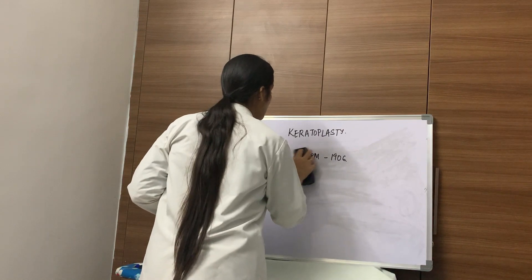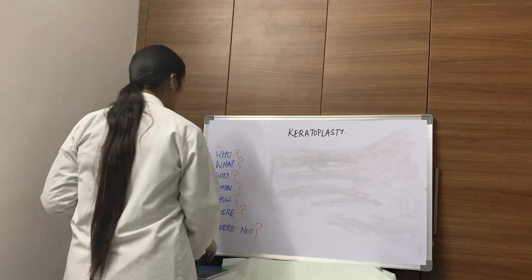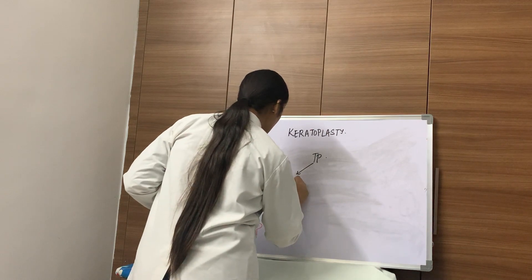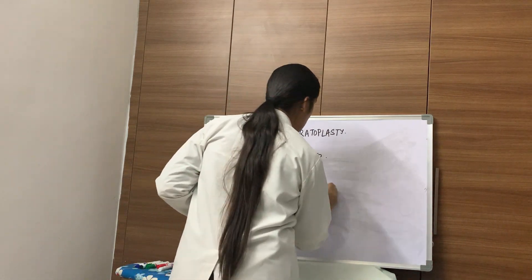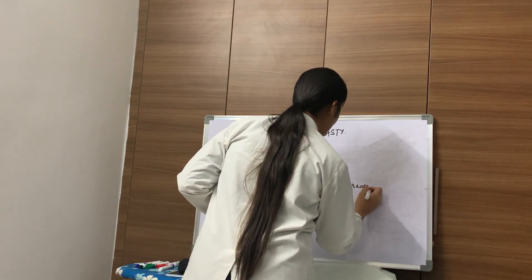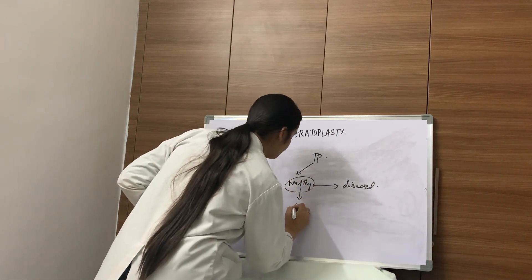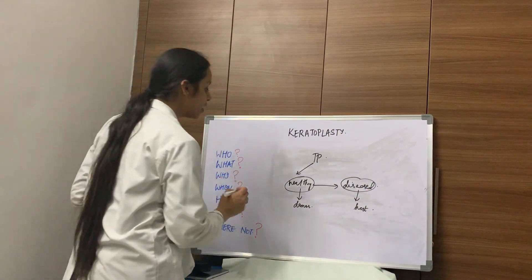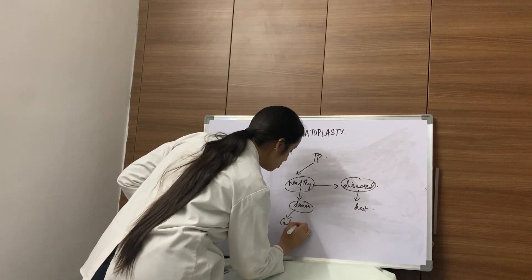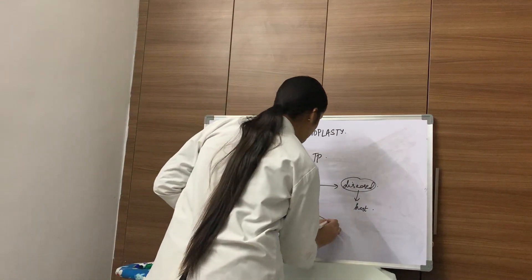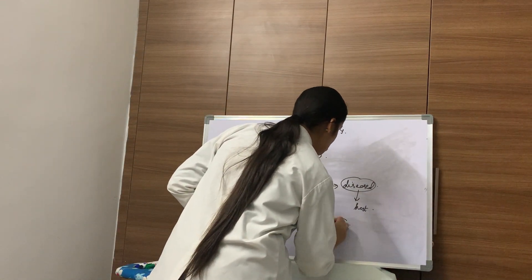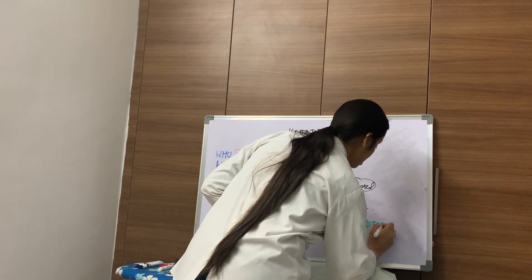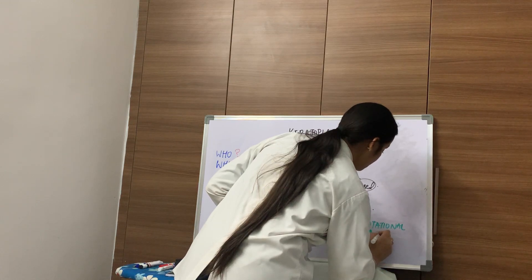Now coming to the next question: what? What is keratoplasty? Keratoplasty is a transplantation procedure in which a healthy cornea is transplanted to replace a diseased cornea. The healthy cornea is obtained from the donor and the diseased cornea belongs to the host. In most cases, the donor is a cadaver. Sometimes, however, the host himself can be the donor — in which case it is called rotational autokeratoplasty.